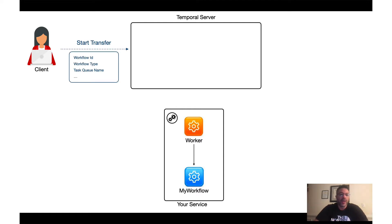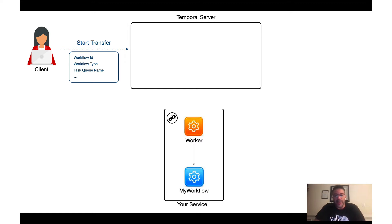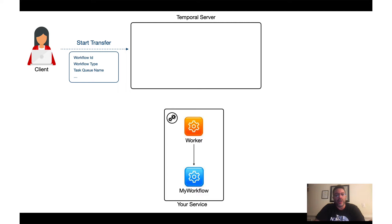The first thing we're going to look at is the client making a request to create and start a workflow execution. This is a gRPC request that gets sent from the client, and you can use any of the Temporal SDK APIs to make this type of request. In this case, we want to start some sort of transfer — a creation of an execution of a transfer workflow. Typically, the information the client sends to the server includes things like a business-level workflow ID, the workflow type, and a task queue name — an endpoint on the Temporal server where this particular execution should be created.